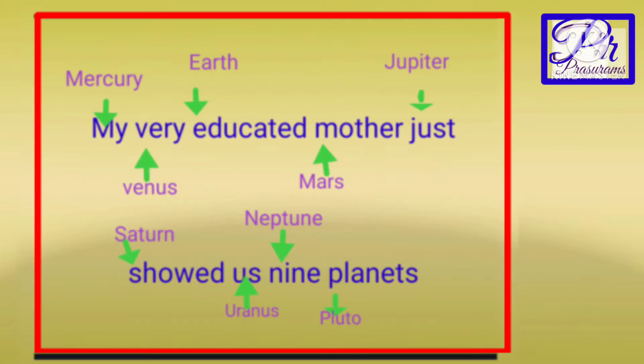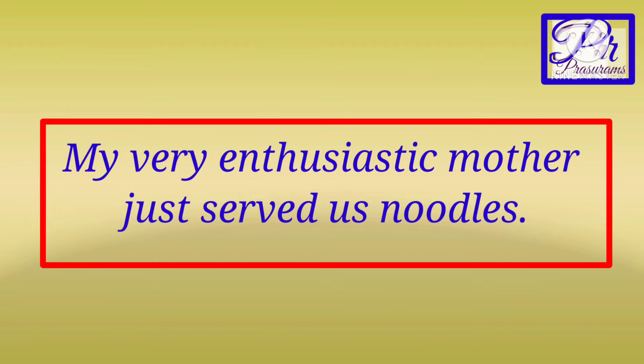Here, the first letter of each word indicates a planet. But now, as you all know, Pluto is considered a dwarf planet and excluded from the solar system. So now, to remember the 8 planets, we have another mnemonic: 'My very enthusiastic mother just served us noodles.' This way, mnemonics help us to remember anything easily.